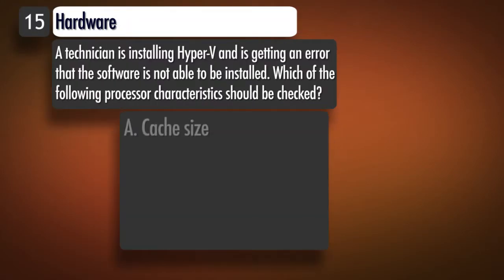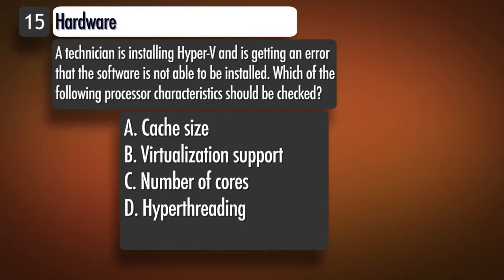Question 15, Topic 1. A technician is installing Hyper-V and is getting an error that the software is not able to be installed. Which of the following processor characteristics should be checked? A. Cache size B. Virtualization support C. Number of cores D. Hyper-threading. Correct answer: B.